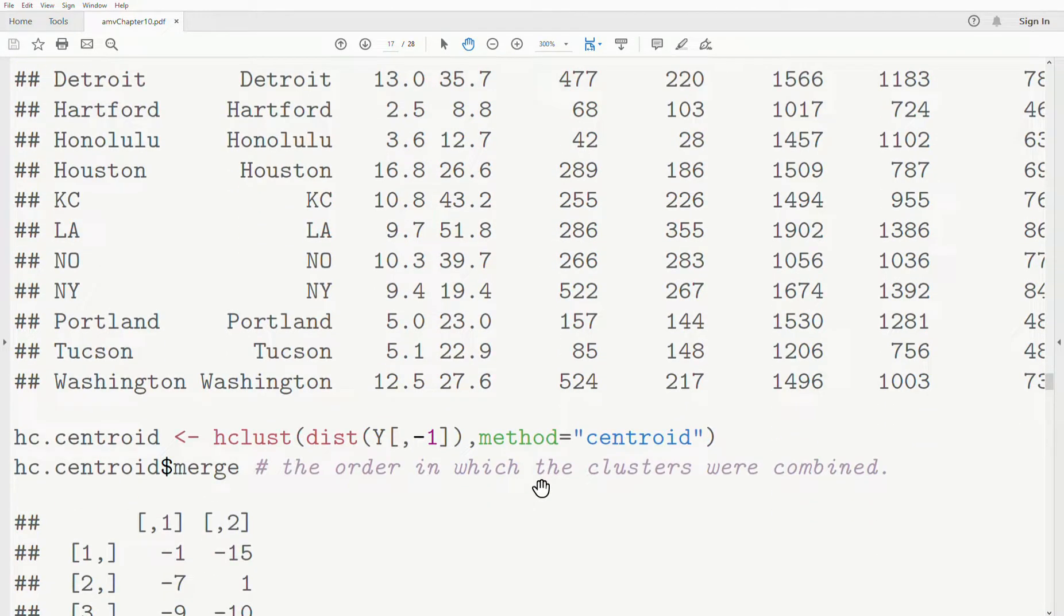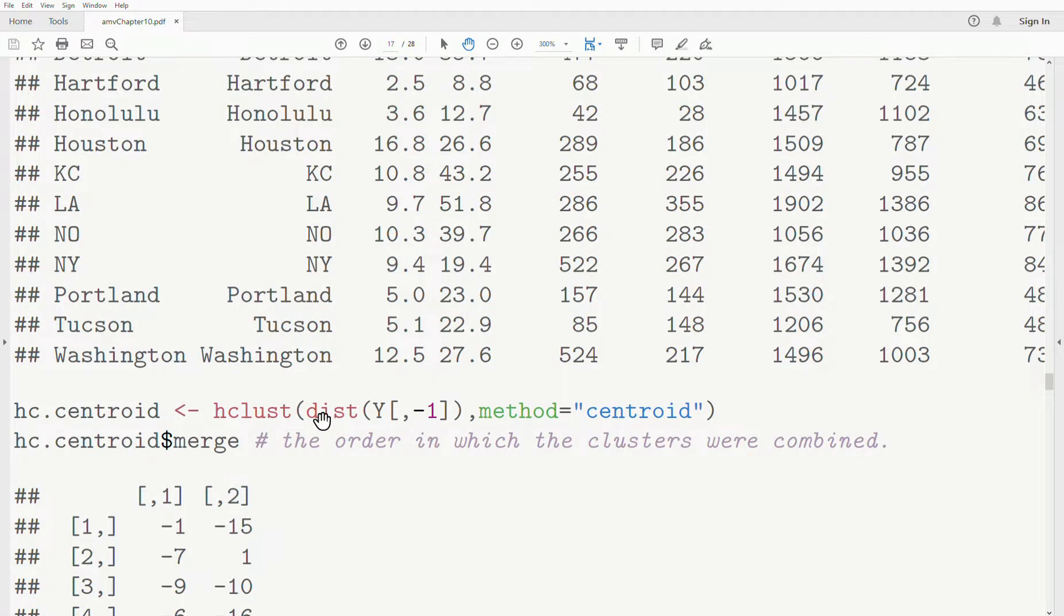Now let's run this data. So let's try to cluster the data. Remember we can't cluster, well, we're only looking at continuous variables in this playlist. So we get rid of the city column, and then we run it through hclust, which is hierarchical clustering. And that's the workhorse function in R for this chapter. We use method centroid. We store all the results in hc.centroid, hierarchical clustering.centroid.